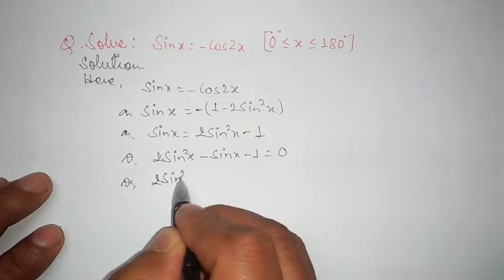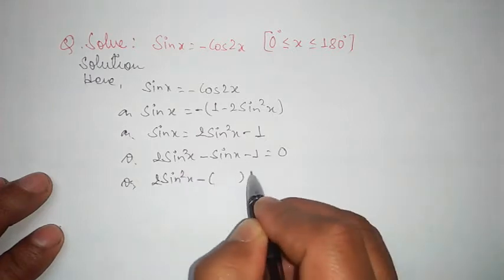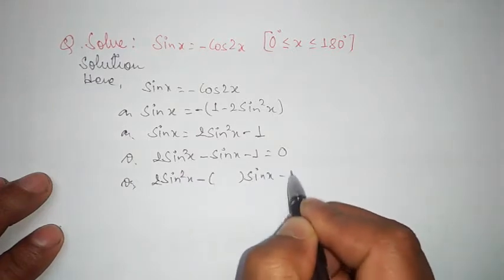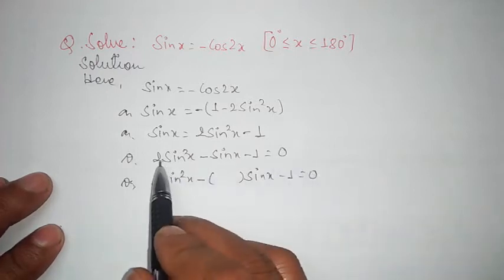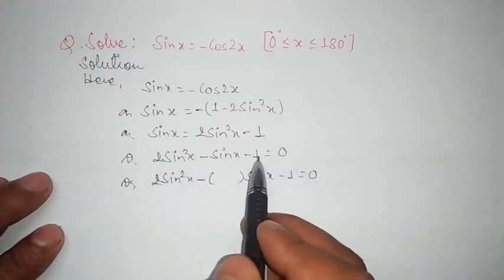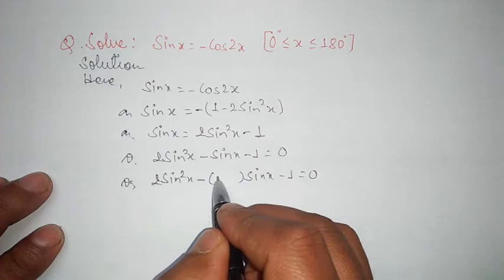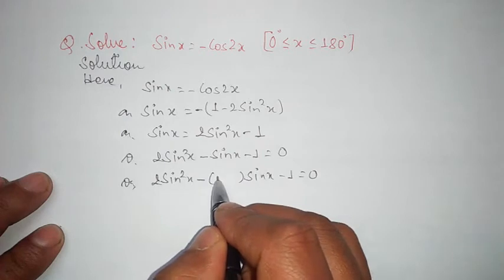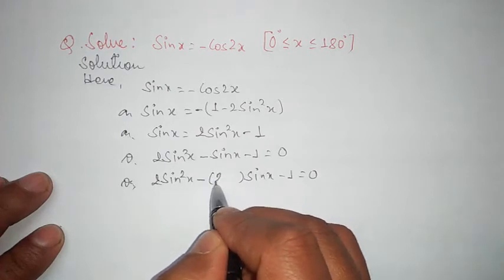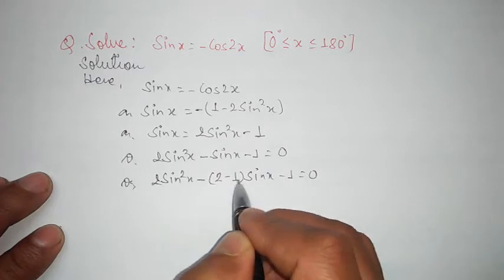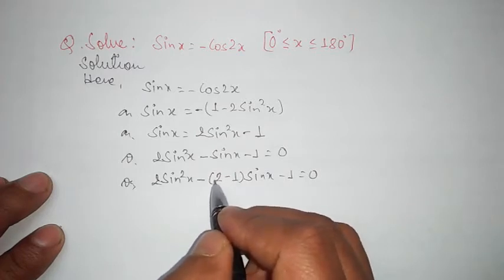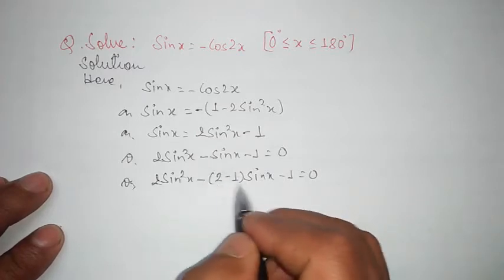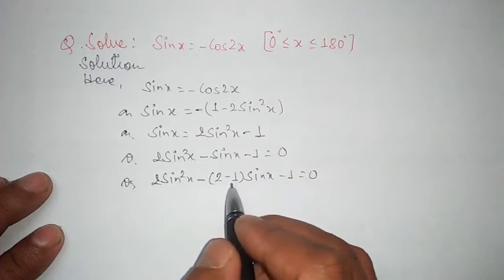2 sin square x minus sin x minus 1 equals 0. Multiply the coefficient of the first term and the constant, which is minus 2. Insert two numbers such that their product will be minus 2, meaning 2 times minus 1, and their difference would be 1, meaning 2 minus 1. So 2 and 1 are the appropriate numbers.